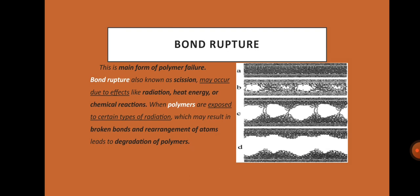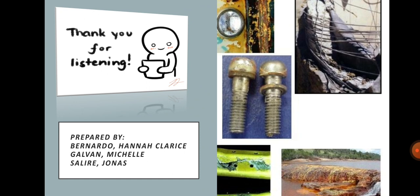Last is bond rupture, the main form of polymer failure. Bond rupture, also known as scission, may occur due to effects like radiation, heat energy, or chemical reactions. When polymers are exposed to certain types of radiation, this may result in broken bonds and rearrangement of atoms, leading to degradation of polymers. And that concludes our presentation.